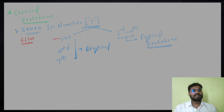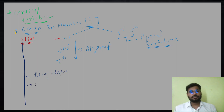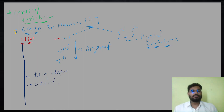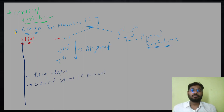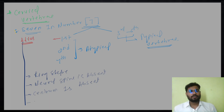The atlas is a ring-shaped structure. It has no neural spine — neural spine is absent here. You can understand the downward structure that should be there is not there, so it looks like a ring. It is the first vertebra and the centrum is also absent. Pre and post zygapophysis are highly reduced.